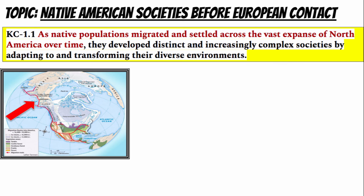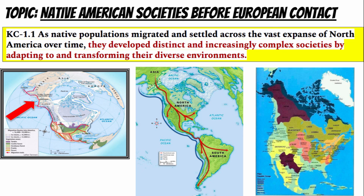The first big topic you're going to want to know about is Native American societies before European contact. As native populations migrated and settled across the vast expanse of North America over time, way back in the day, like 50,000 BCE, people began migrating from Asia across the Bering Strait land bridge all the way from present-day Canada down into the southern tip of South America. They developed distinct and increasingly complex societies by adapting to and transforming their diverse environments.